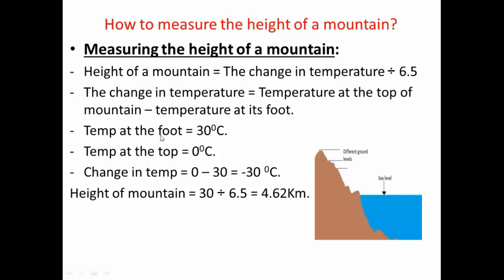For example, if the temperature at the foot of a mountain is 30 degrees Celsius and the temperature at its top is 0 degrees Celsius, the change in temperature equals 0 minus 30, which equals minus 30 degrees Celsius. The height of the mountain equals 30 divided by 6.5, which equals approximately 4.62 kilometers.